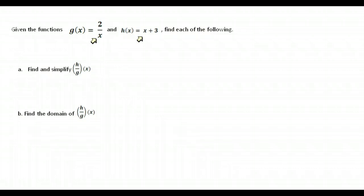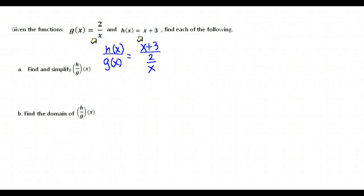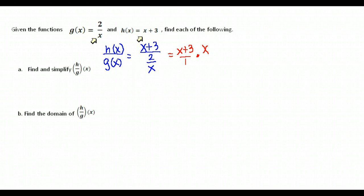Here is another example. We're given g of x and h of x and asked to do h over g of x, simplify it, and then find the domain. h divided by g of x means we take h of x divided by g of x. h of x — which is x plus 3 — goes on top, and g of x — which is 2 over x — goes on the bottom. We can't have fractions within fractions, so notice this is really just a division problem: x plus 3 divided by 2 over x. When dividing fractions, you flip the second fraction and multiply.